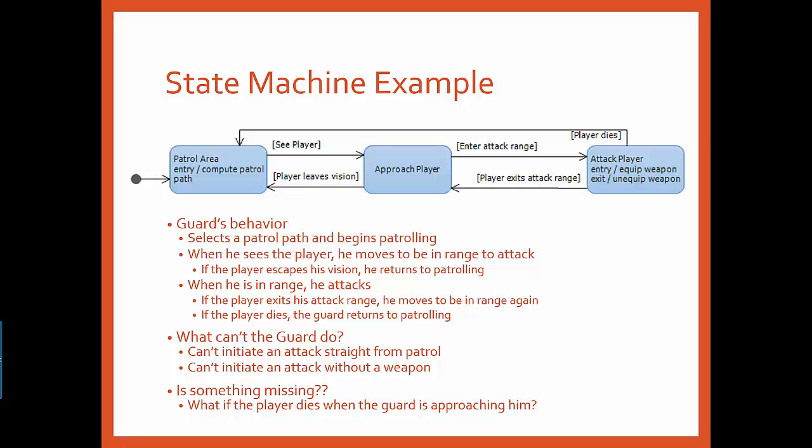The guard may not realize the player is dead and may move into the attack player state, equip his weapon, and then realize that the player is dead, unequip his weapon, and return to patrolling. This might not look very intelligent. However, what if the player's body never disappears? The guard may attack the dead body, which would look really dumb. Here is where a state machine can help you think through your AI logic. It can help you account for every single event that would impact the agent's decision-making process and plan a response to each of them.